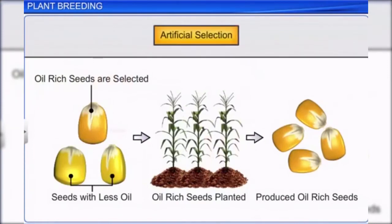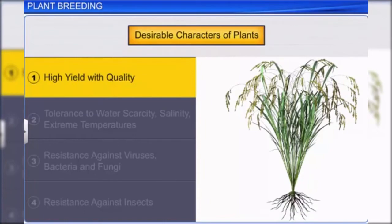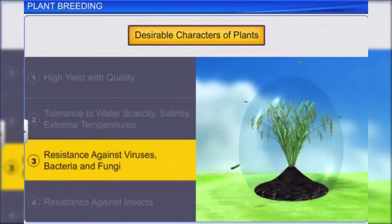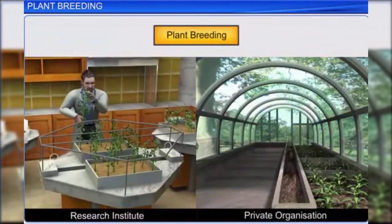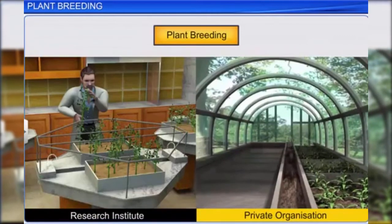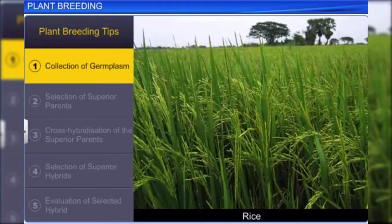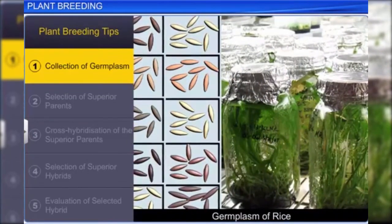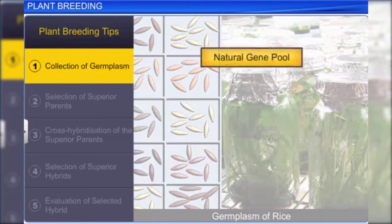Most major crops such as wheat, rice, and maize are the result of conventional breeding. Classical breeding also uses techniques such as mutation or tissue culture, followed by cross-breeding of pure lines and artificial selection. The desirable characters of plants generated by plant breeding include high yield with quality, tolerance to different types of environmental stress, resistance to microbes and pests. Plant breeding is commonly carried out in government research institutes and some private organizations, and involves several steps. The first step is the collection of germplasm — the collection of all genes of different varieties of a crop in the form of seeds or plants — so the naturally available gene pool can be utilized.